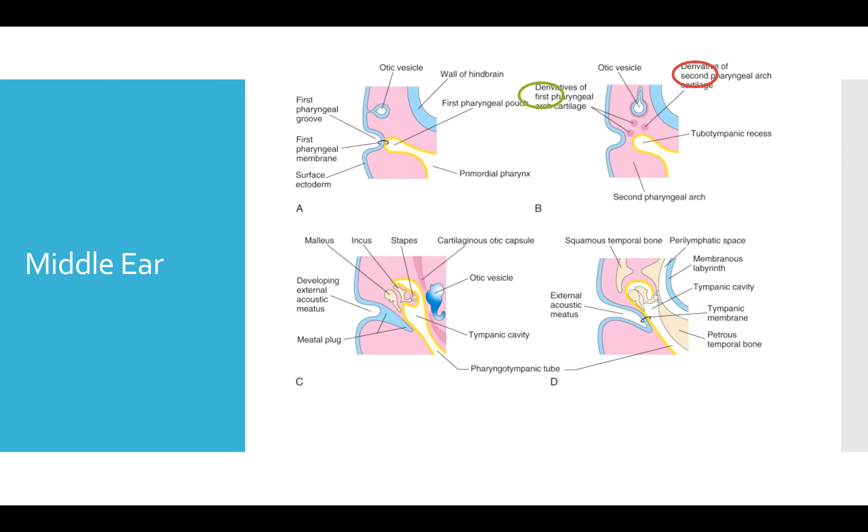So meanwhile, the tubotympanic recess, which is made up of the first pharyngeal membrane, is elongating and growing superiorly. And it then envelops these three middle ear bones. And this forms the adult tympanic cavity and forms also the inner part of the adult tympanic membrane.